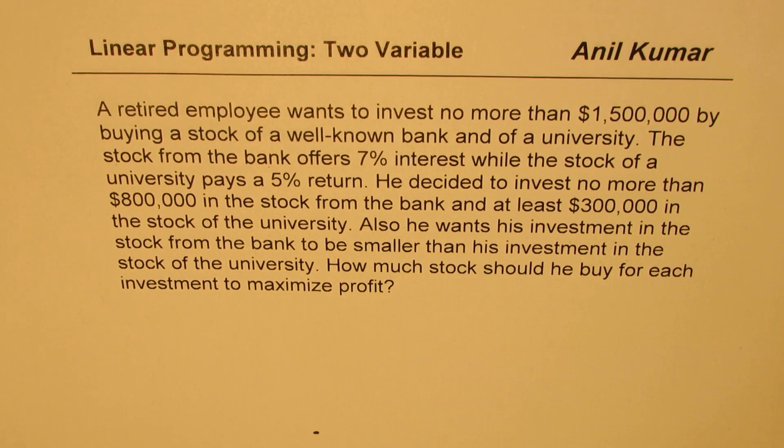A retired employee wants to invest no more than $1,500,000 by buying stock of a well-known bank and of a university. The stock from the bank offers 7% interest while stock of a university pays a 5% return. He decides to invest no more than $800,000 in the stock from the bank and at least $300,000 in the stock of the university. Also he wants his investment in the stock from the bank to be smaller than his investment in the stock of the university. How much stock should he buy for each investment to maximize profit?